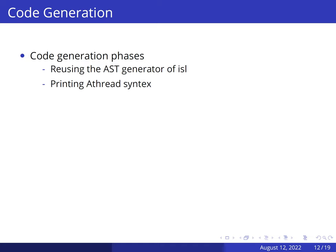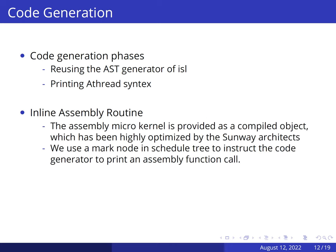Now, the final schedule tree could be scanned to generate the code. We separate code generation into two phases, with AST first produced using the functionality of ISL and the A-thread syntax next printed. Reusing the AST generator of ISL reduces the engineering cost. We combine inline microkernels with polyhedral transformations. The assembly microkernel is provided as a compiled object, which has been highly optimized by the Sunway architects. Combining it with polyhedral transformations can achieve near-peak performance. We use a mark node in schedule tree to instruct the code generator to print an assembly function call.